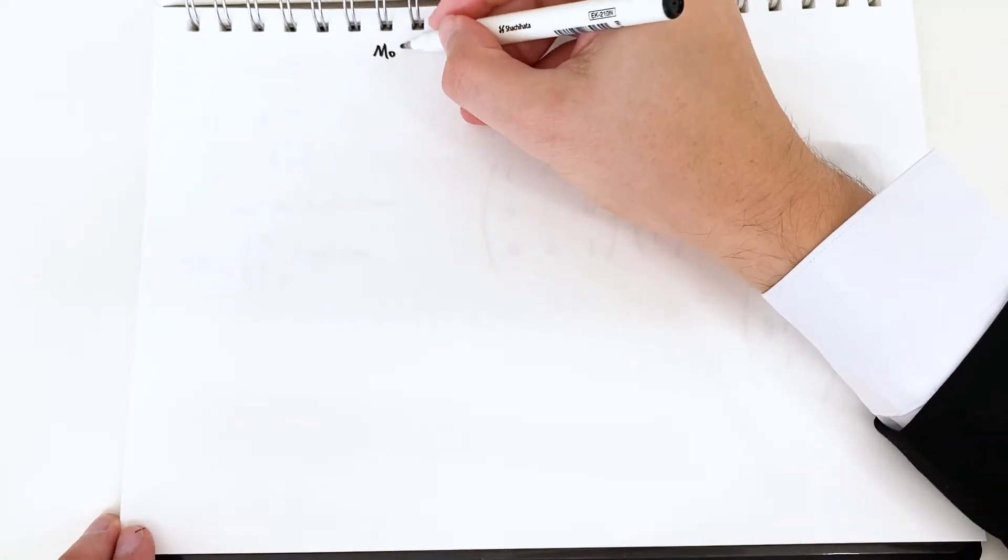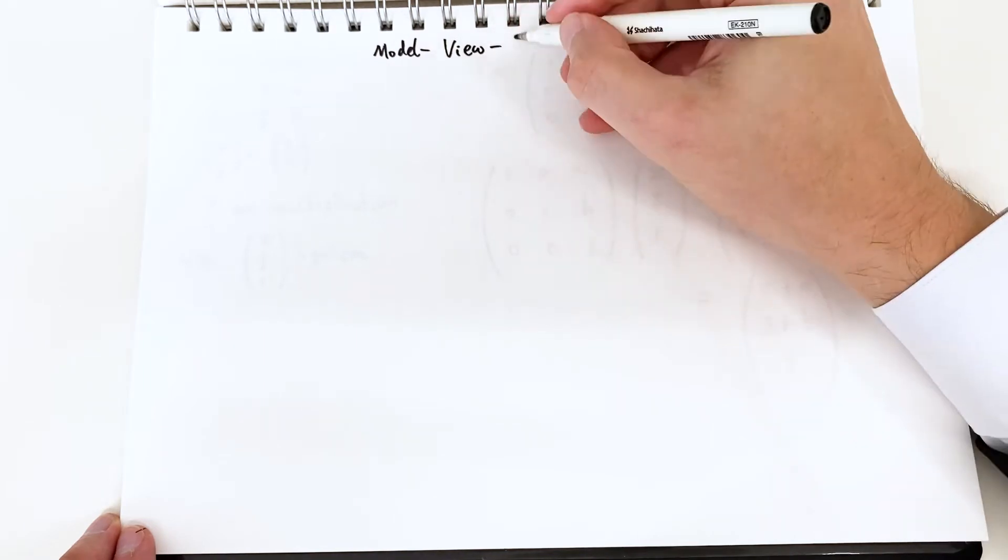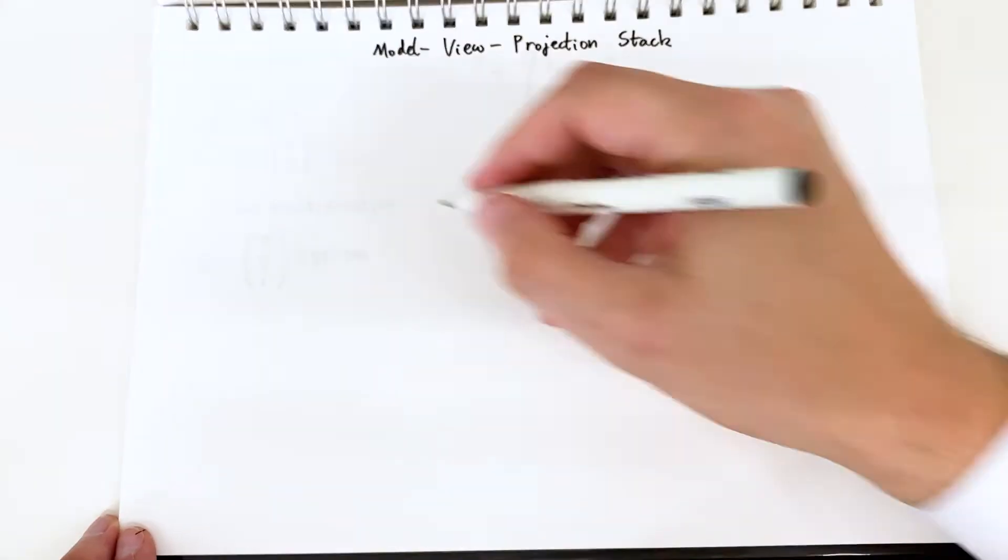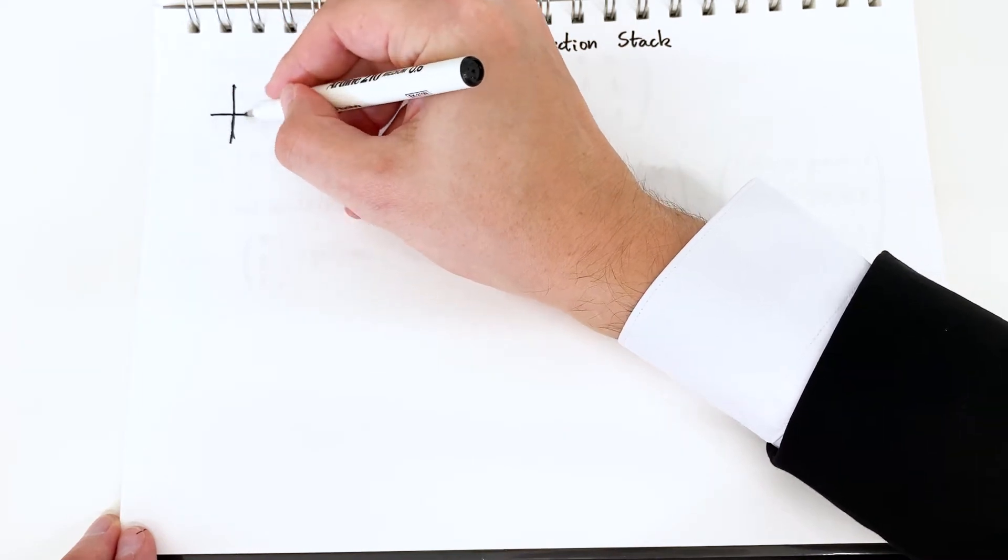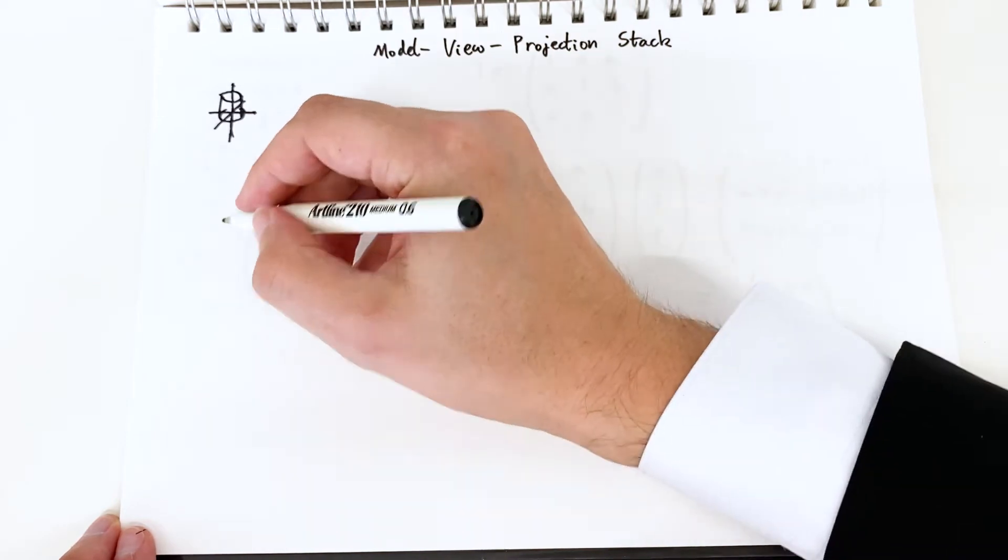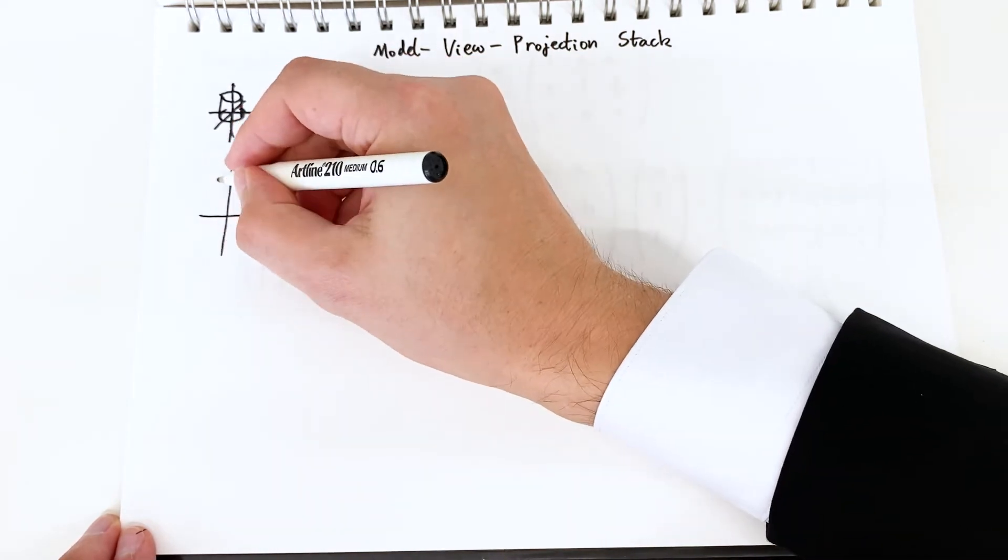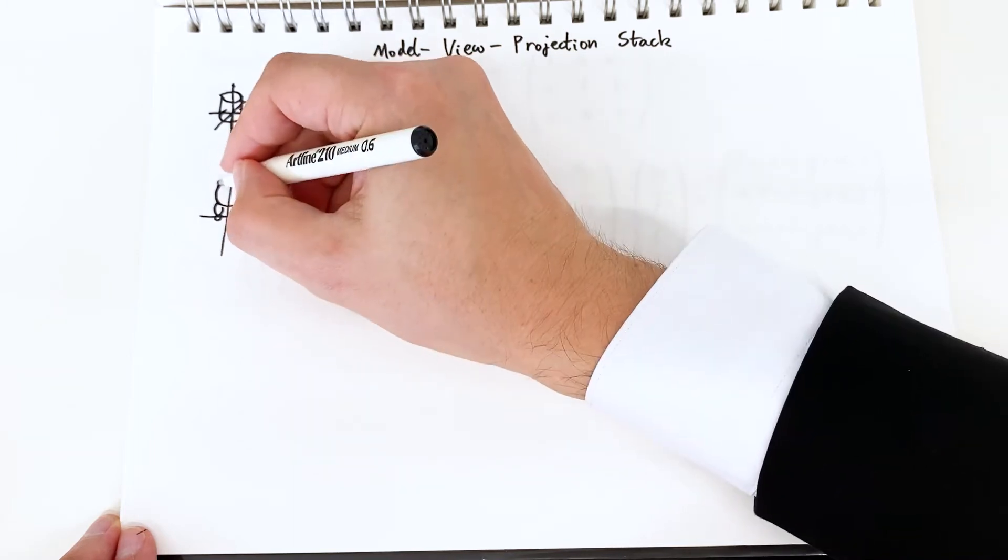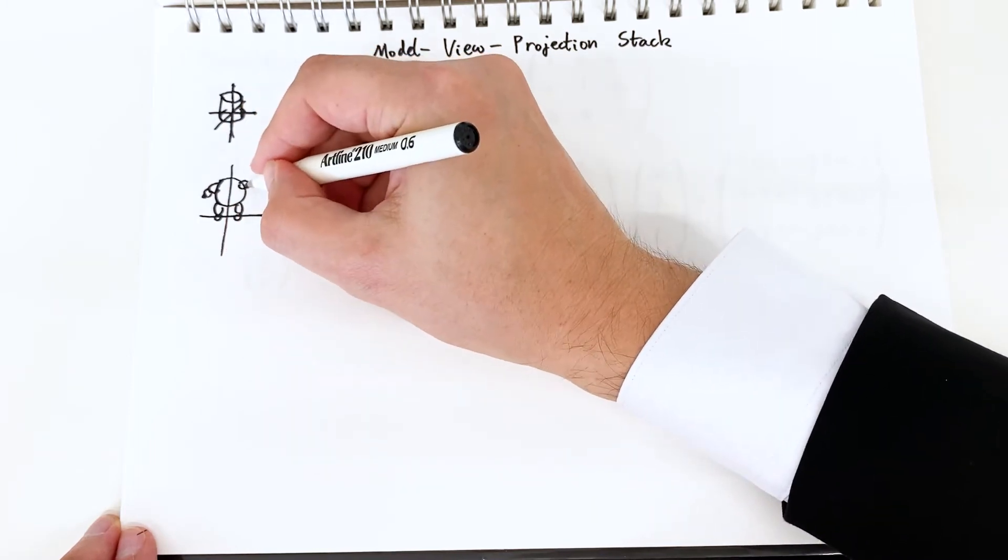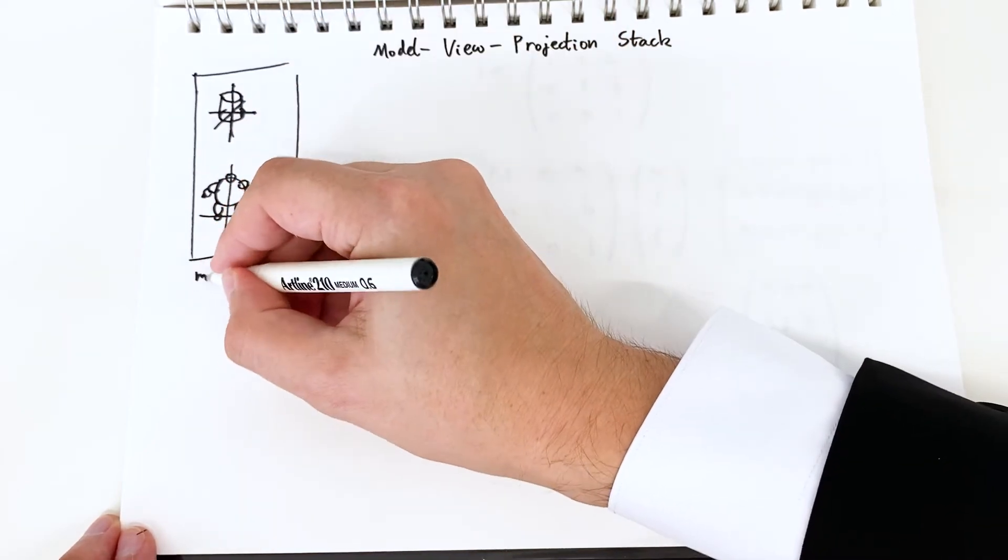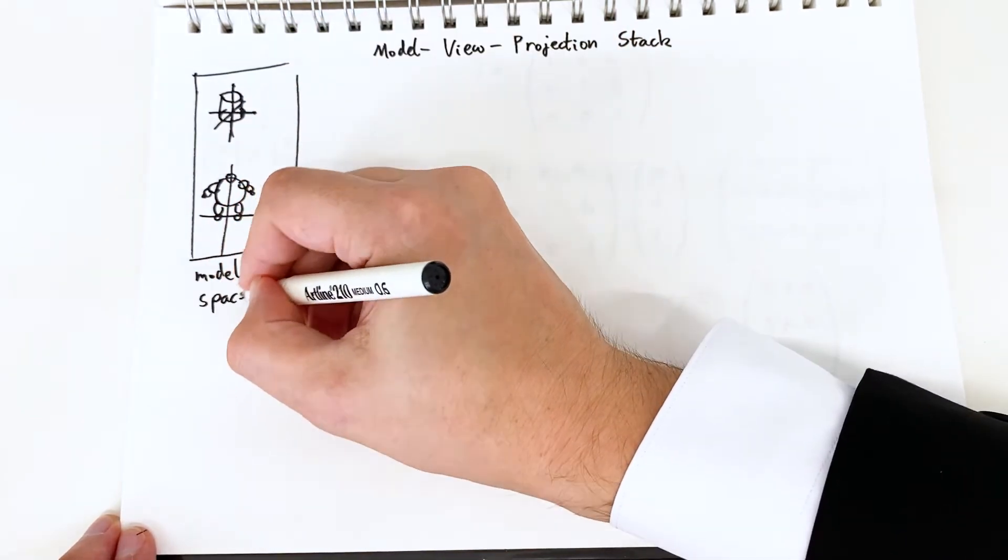Let's look at an example of transformations. A common application is what's called the model view projection stack. Stack of course meaning series of transformations. We'll start with some models. For my example I'm going to have a cylinder model and a person model. They will be defined in what's called model space where the origin of the coordinate system is a local origin to the model.